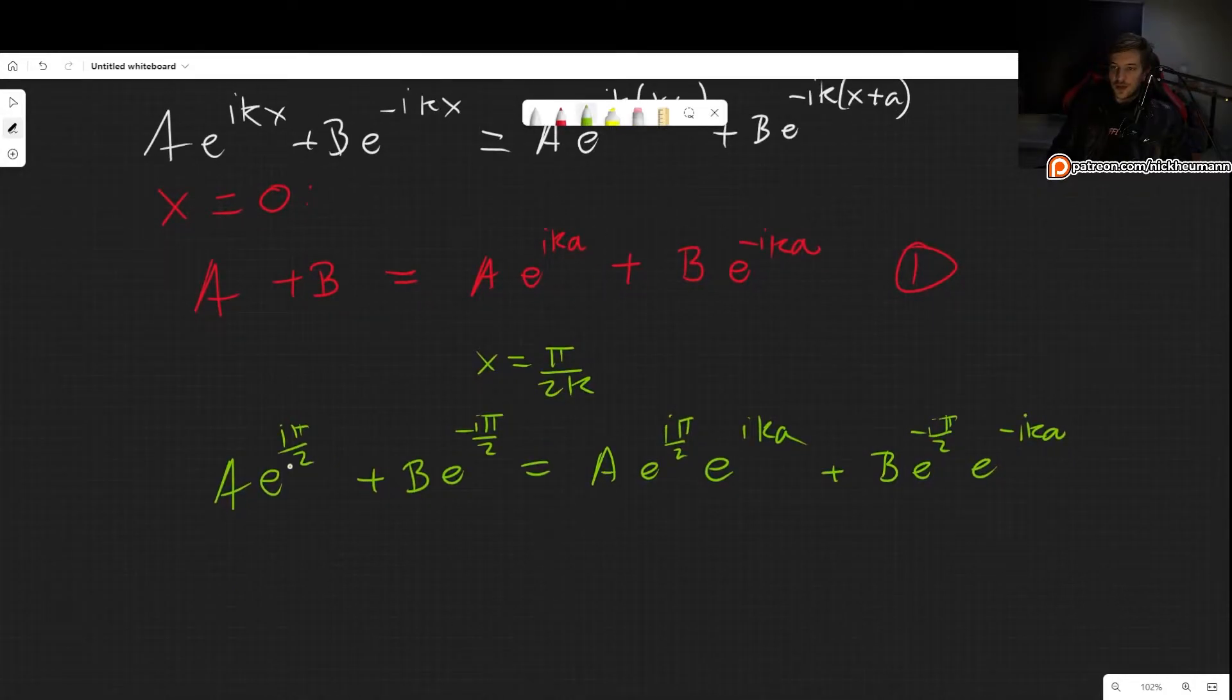Here we can simplify a few things. This e is i, so we get Ai plus B. Here it is -i, because this is cosine of -π/2 plus i sine of -π/2, which is -1, so we get -i. So this is -iB, and here we have Aie^(ika) minus iBe^(-ika).